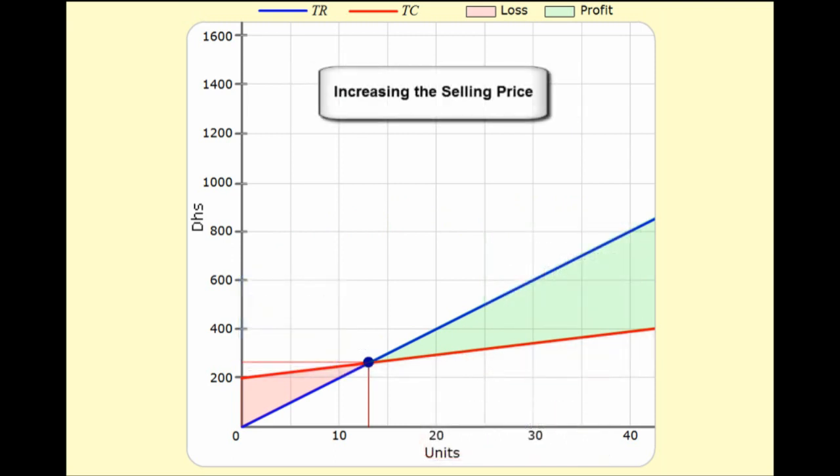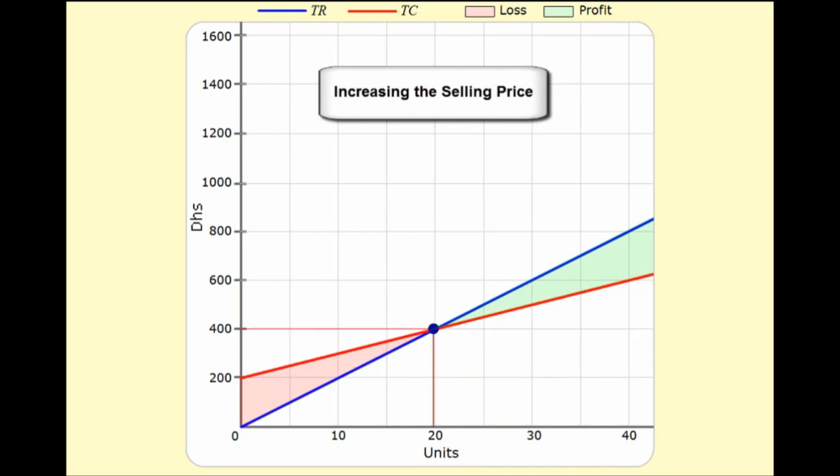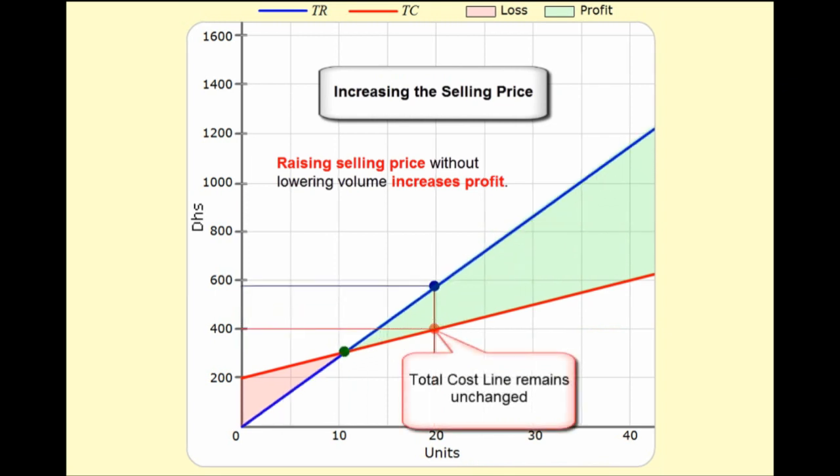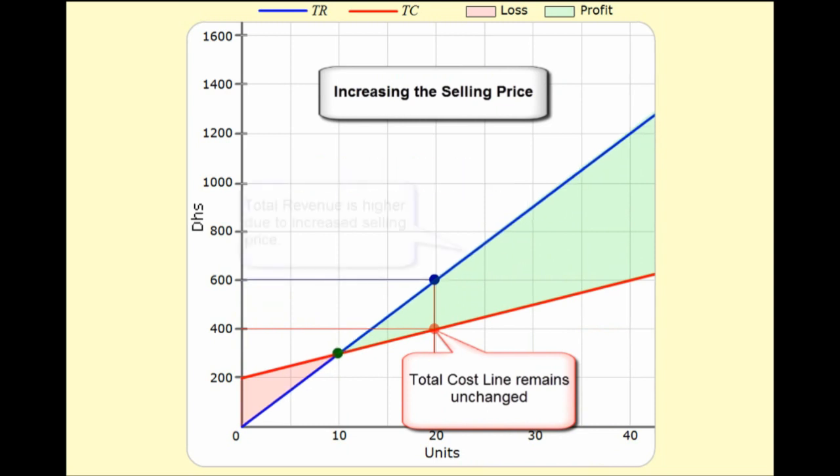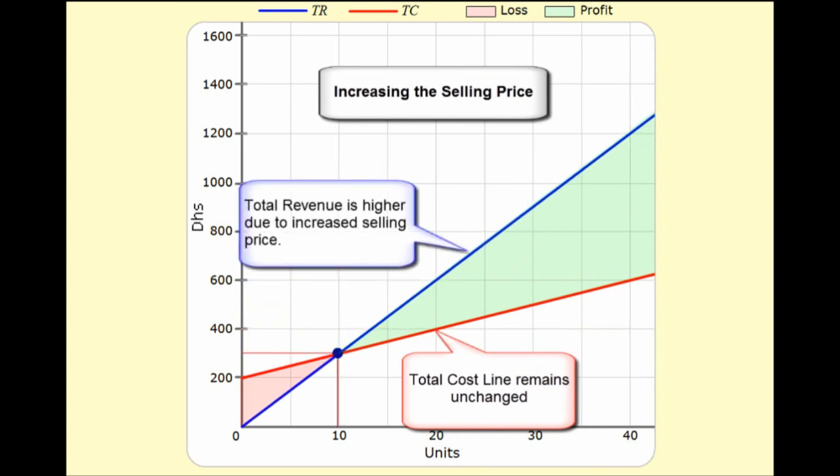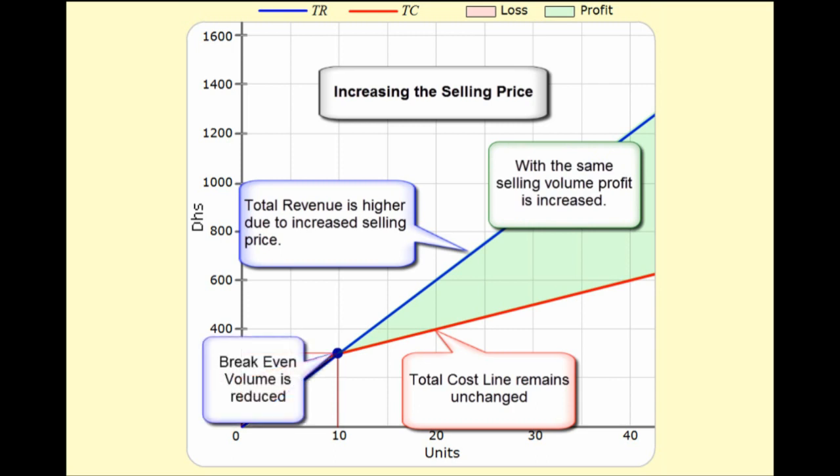What if we are able to increase the selling price per unit? Raising the selling price without lowering volume increases profit. Here, our total cost line is the same, but our total revenue line is higher because the selling price per unit is higher. So, at the same selling volume X, we are making more profit. Again, in this case, the break-even volume is reduced.